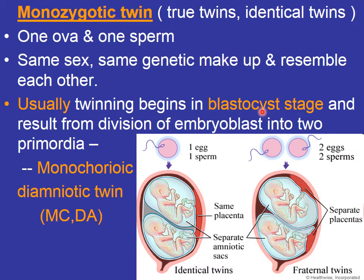Usually the splitting begins at the blastocyst stage — at the end of the first week — where the embryoblast splits into two primordial groups. Since they share one blastocyst cavity, they will have one chorion but develop their own amnions; so they are labeled as monochorionic diamniotic twins. They share one chorion and one placenta but have their own separate amniotic cavities.